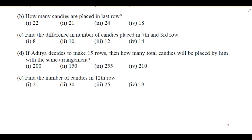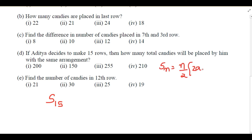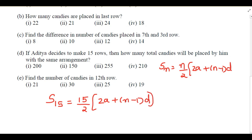Next question: if Aditya decides to make 15 rows, how many total candies will be placed with the same arrangement? We need to find S₁₅. Using Sₙ = n/2 × (2a + (n-1)d): S₁₅ = 15/2 × (2×3 + (15-1)×2).